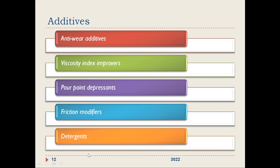These additives can also be added to improve the properties of a hydraulic oil: anti-wear additives, viscosity index improvers, pour point depressants — we have discussed what pour point is — friction modifiers, and last but not least, detergents for improving cleanliness.